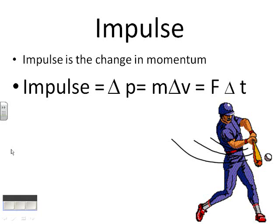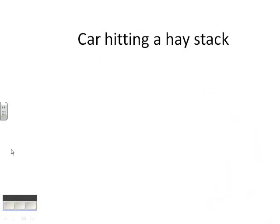A classic example to illustrate impulse would be changing your momentum of a car. So let's say the brakes go out and you have a choice between hitting a haystack to slow you down or hitting a brick wall. We would clearly pick the haystack, but why would we?